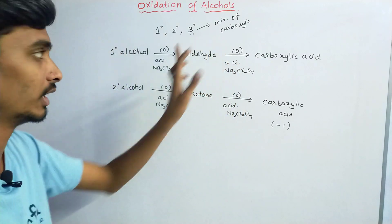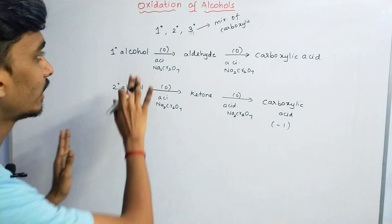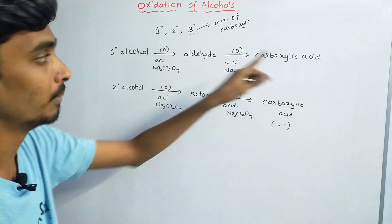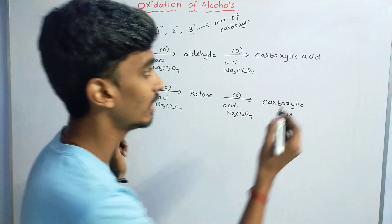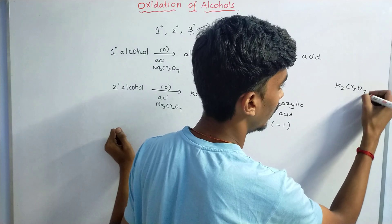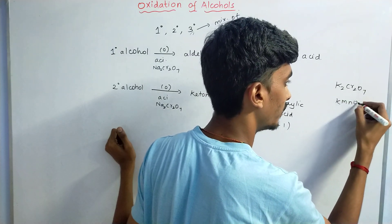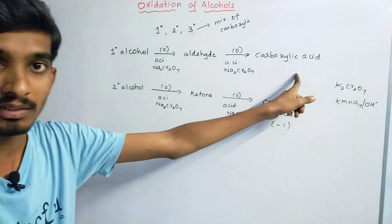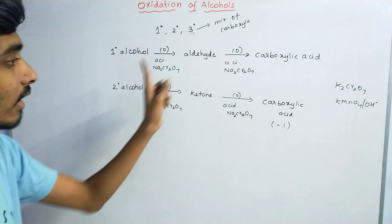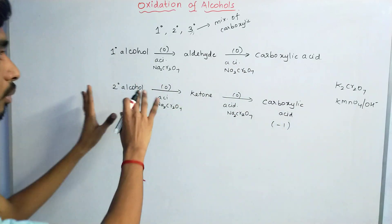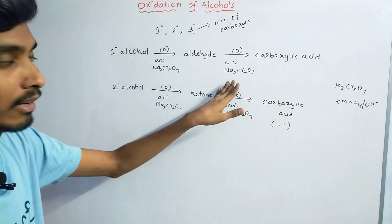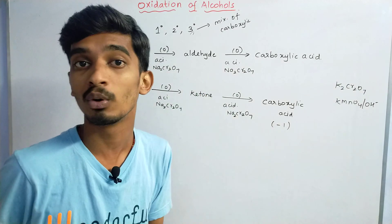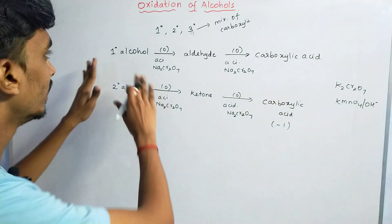For example, strong oxidizing agents like potassium dichromate and potassium permanganate in the presence of a base will convert primary alcohol directly to carboxylic acid, and secondary alcohol also to carboxylic acid. However, this happens step by step; these are strong oxidizing agents, unlike acidified sodium dichromate.